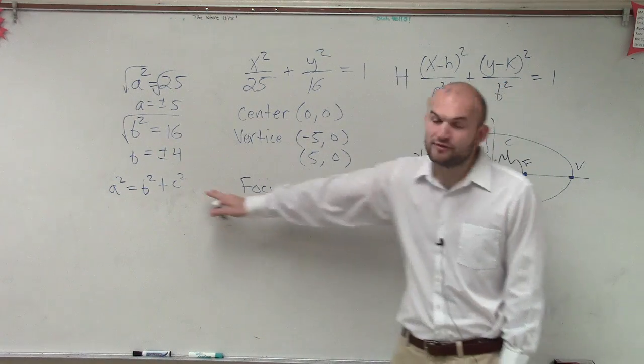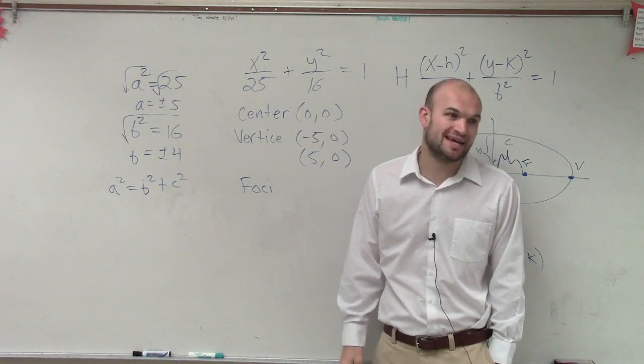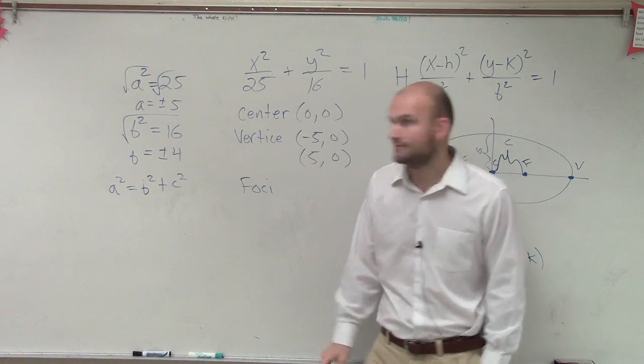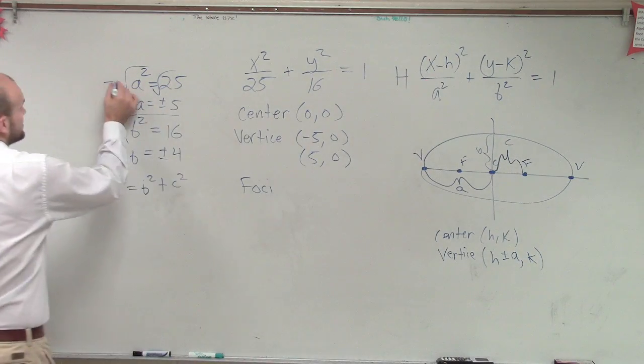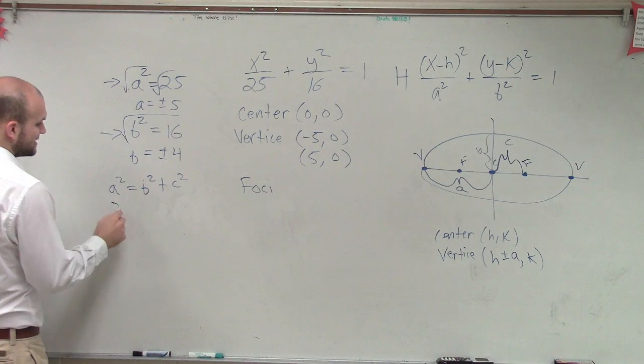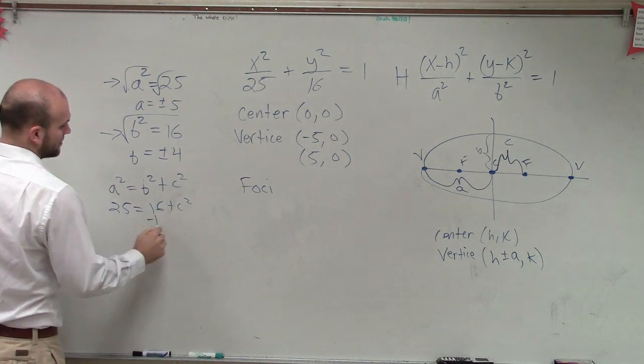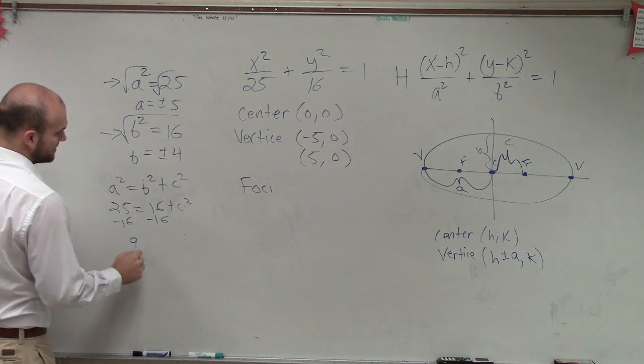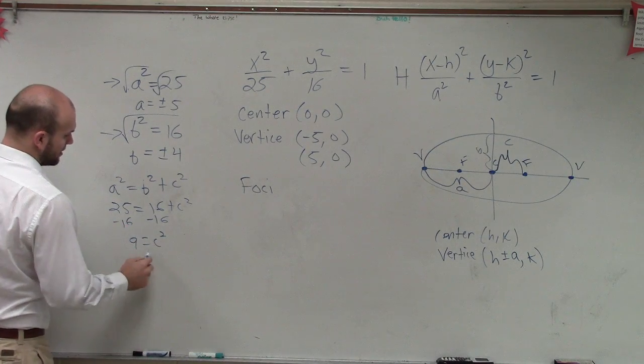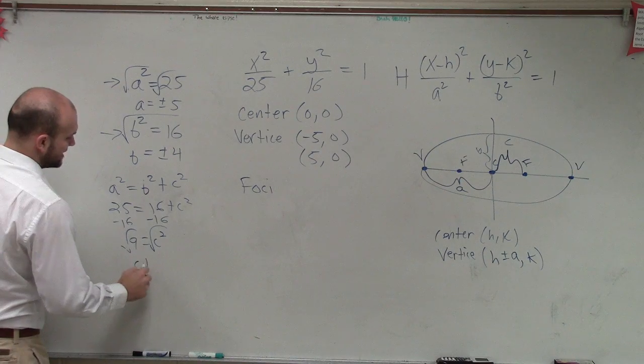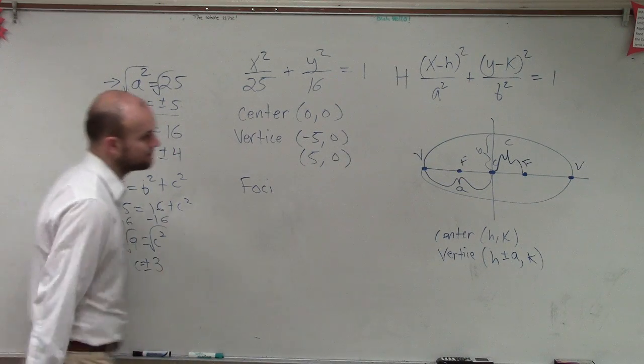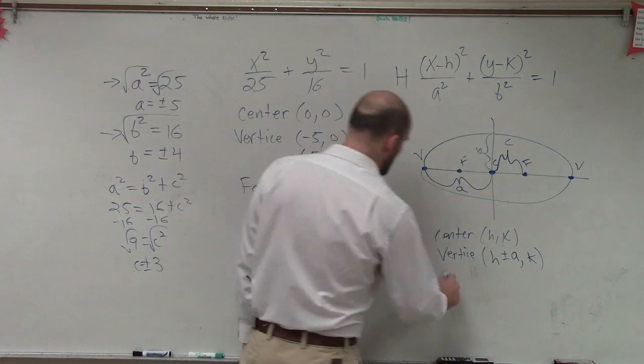So, we need to figure out what C is, do we know what A is and do we know what A squared is and know what B squared is? Yeah, all right, we already figured, we already knew those from right here. So, I'm going to say 25 equals 16 plus C squared minus 16, 9 equals C squared, square root, square root, C equals plus or minus 3.